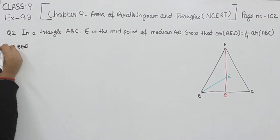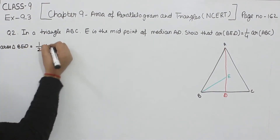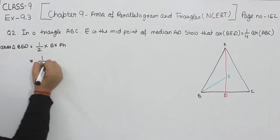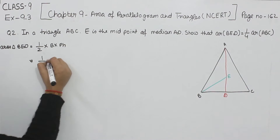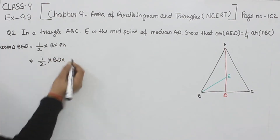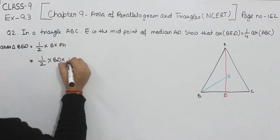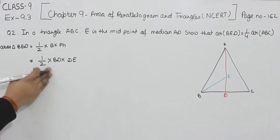To find the area of triangle BED, the formula is half of base multiplied by the perpendicular height. So it is half of BD multiplied by DE. This gives us the area of triangle BED as half of BD multiplied by DE.